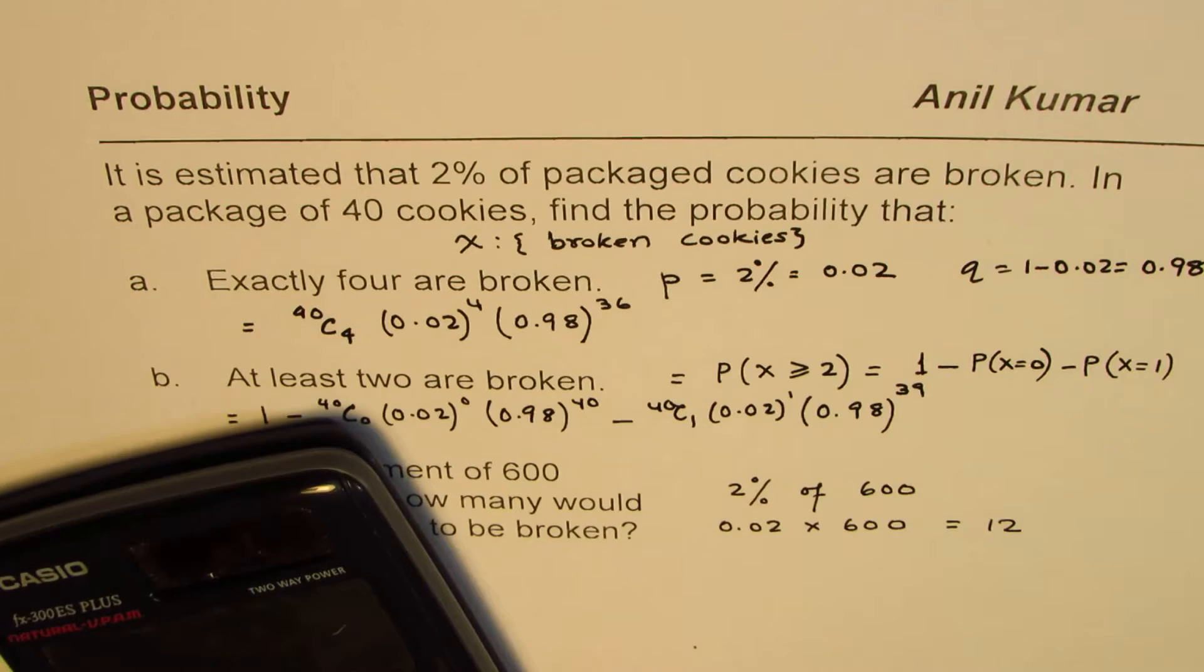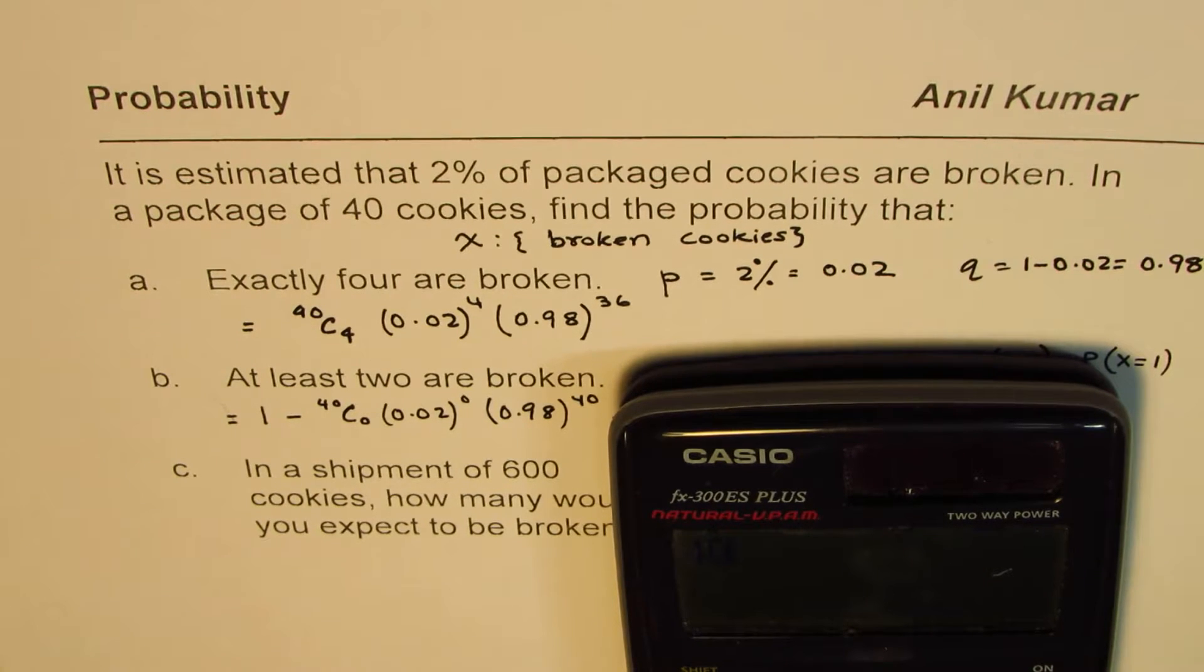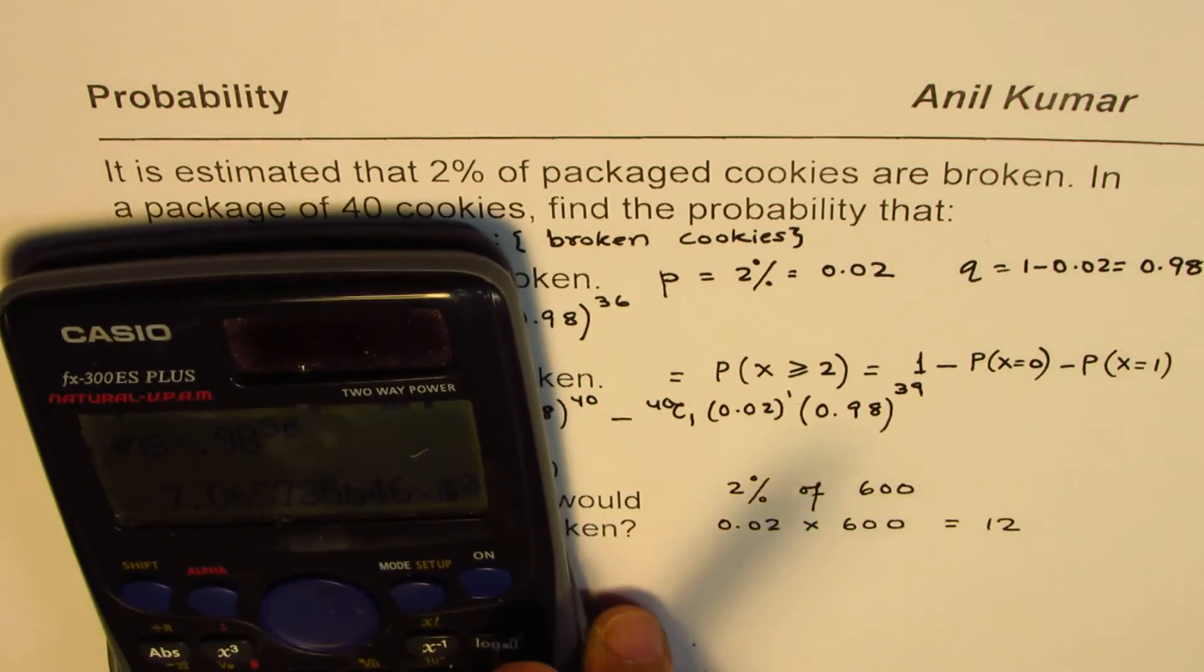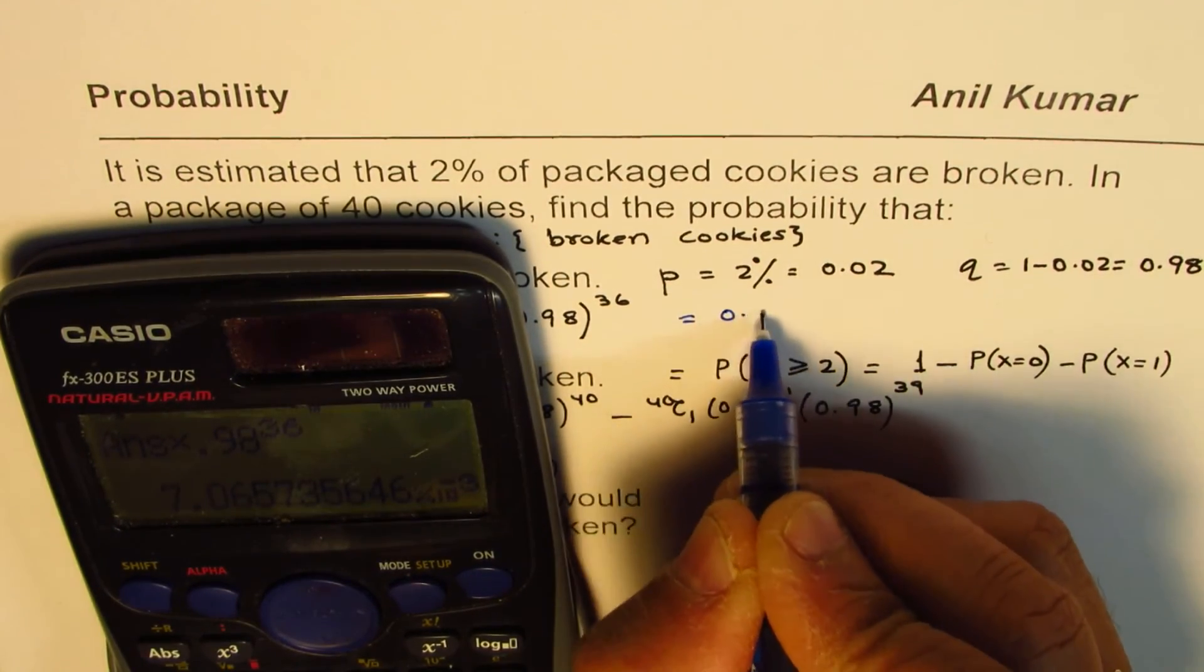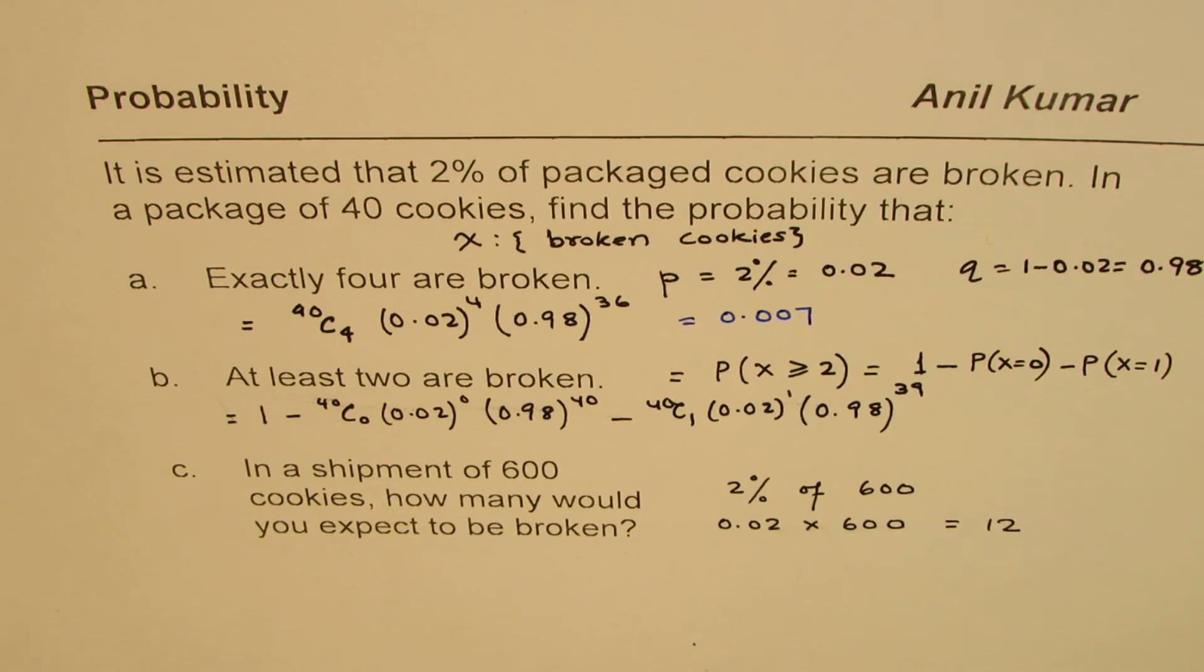Let me give you the solutions now. When you use the calculator and find these answers, for example, 40 combination 4 times 0.02 to the power of 4 times 0.98 to the power of 36, you get 7.063 times 10 to the power of minus 3. So that really means this is equal to 0.007. Likewise, you can calculate all the values and move on with the next question. I hope that really helps.